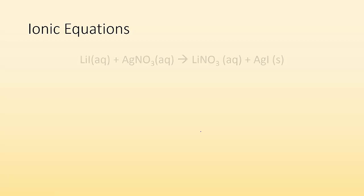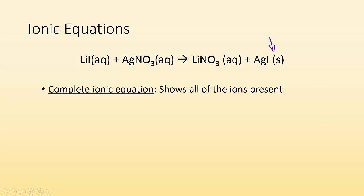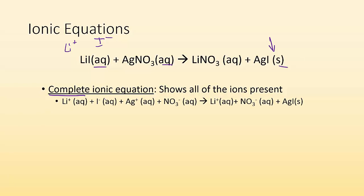Now, ionic equations — how do we write these? Here's the example: lithium iodide and silver nitrate giving lithium nitrate and silver iodide, which is the precipitate — a solid. The first type is the complete ionic equation, which shows all the ions present. If it's aqueous, you write them as individual ions; if it's a solid, they stay together. So: Li⁺ (aq), I⁻ (aq), Ag⁺ (aq), and NO3⁻ (aq) as reactants, giving Li⁺ (aq), NO3⁻ (aq), and AgI (solid).